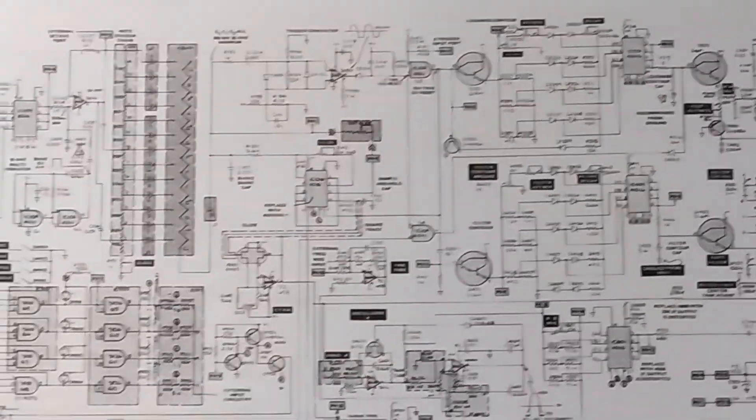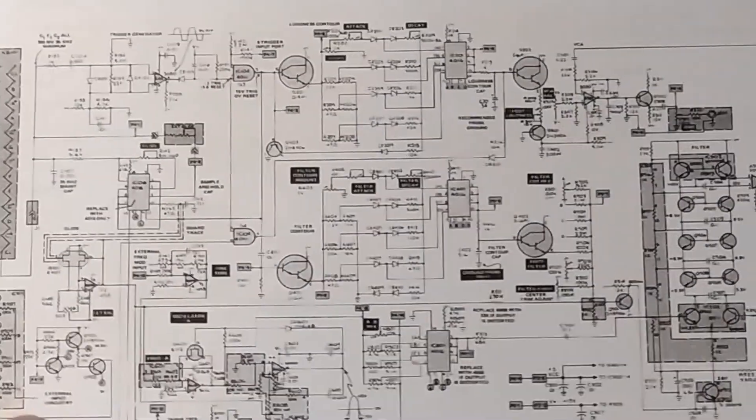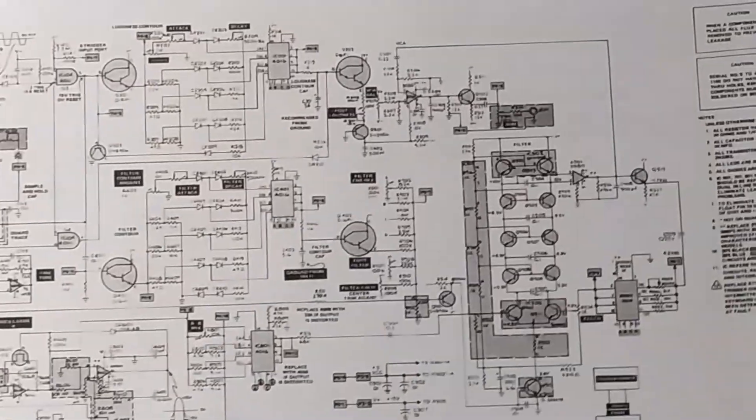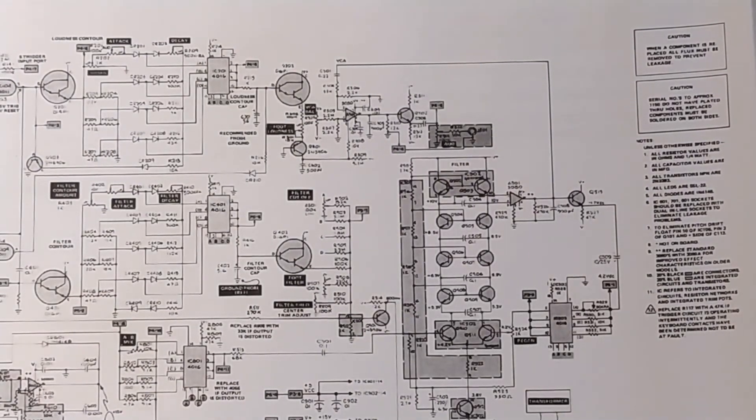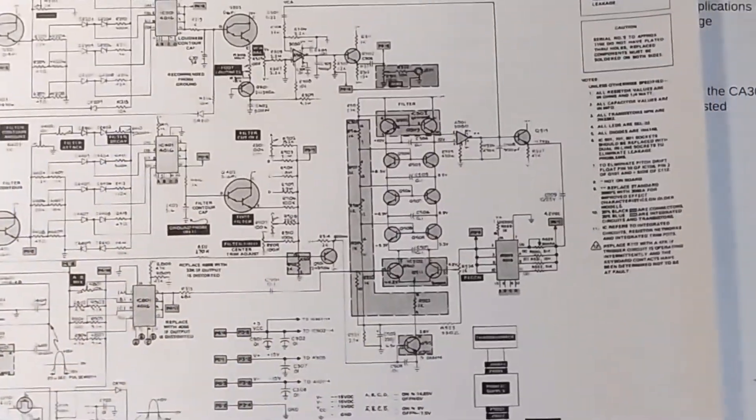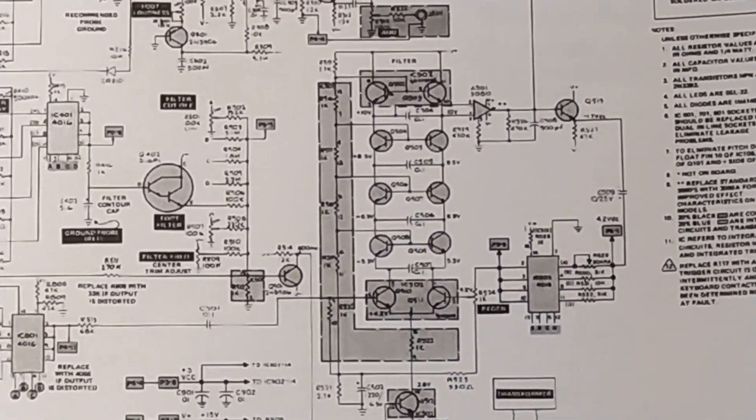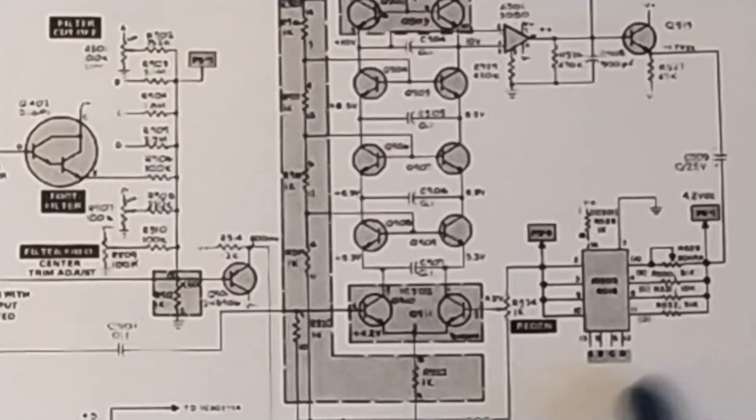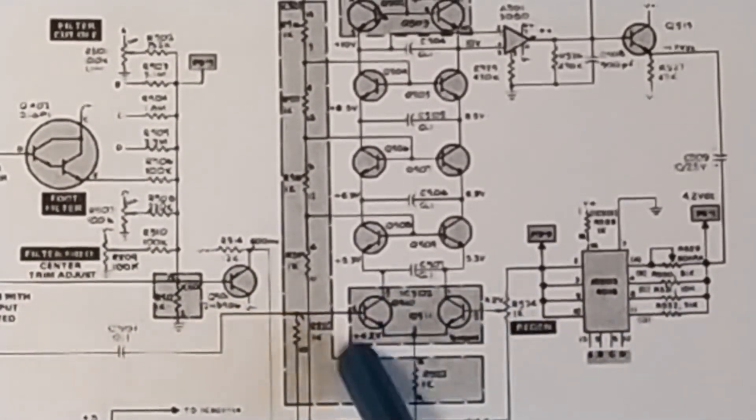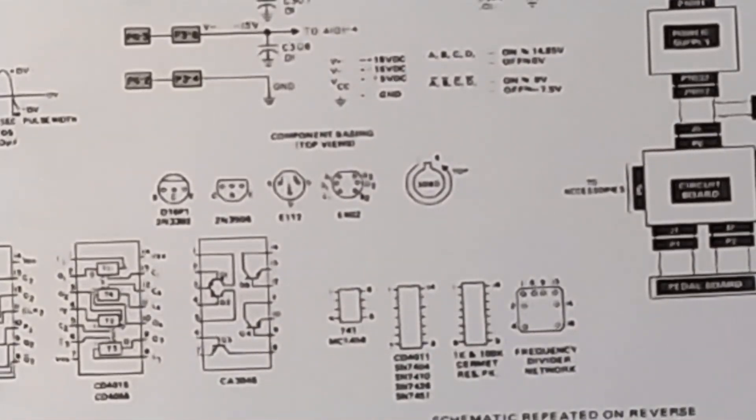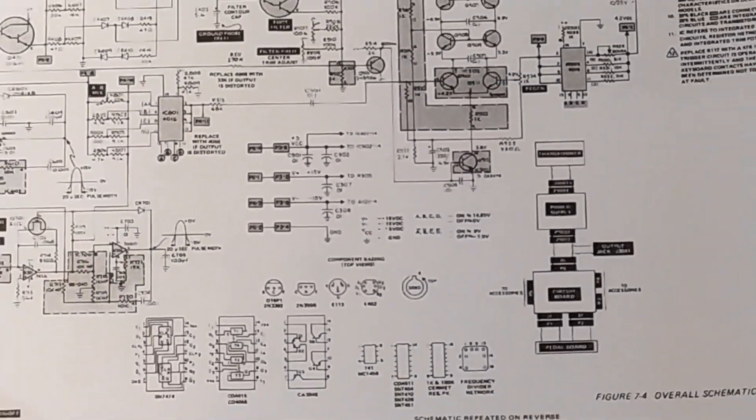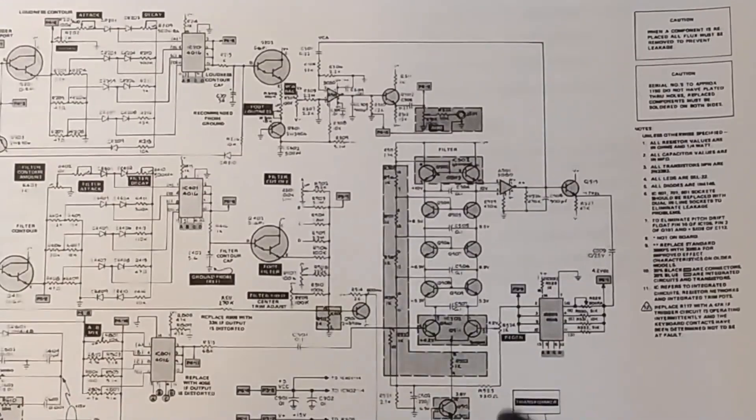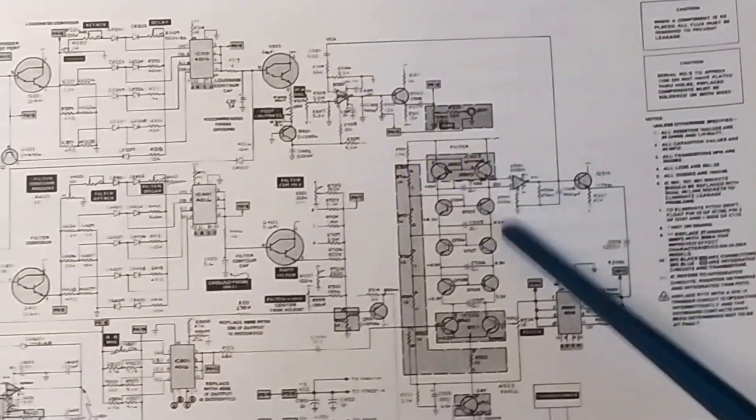This is the schematic of the Moog... I can't remember what it's called, but anyway. If you look down here, it's not the best scan in the world, but these are our differential pairs out of our CA3046 here. And they actually use the other transistor. Here's another one, another differential pair.